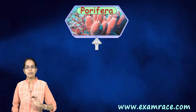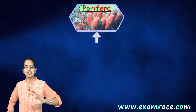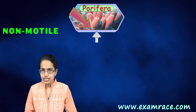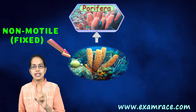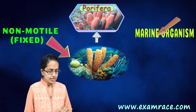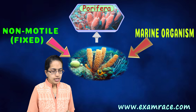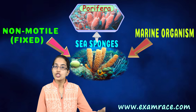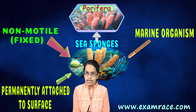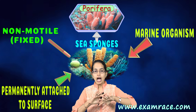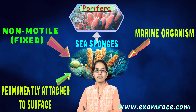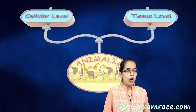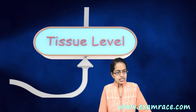The most interesting characteristics about Porifera: they are non-motile, they are fixed, and mostly marine. A good example would be sponges. They are attached to the ground or to the base in the water surface, and the outermost covering is made up of skeleton.